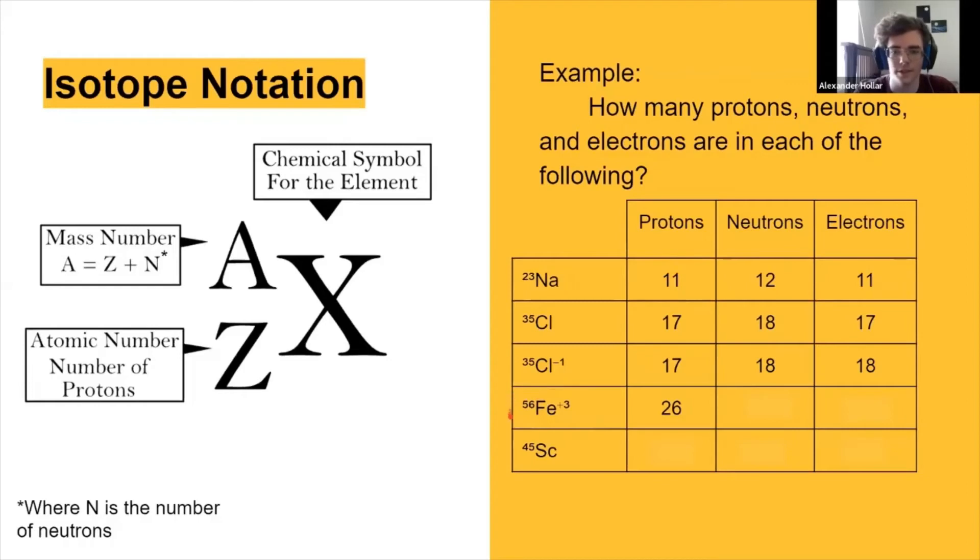And we know that the protons plus the neutrons is 56. So we can rearrange this equation to solve for the number of neutrons. We would have A minus Z is equal to N. We know our A and we know our Z, so what would our N be? Yep, 30. There you go.